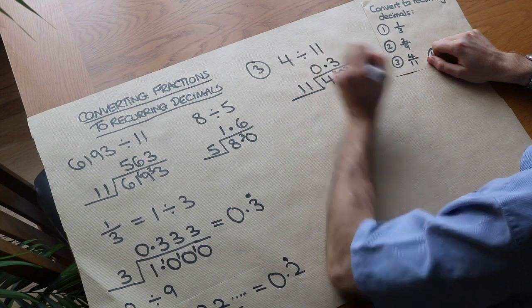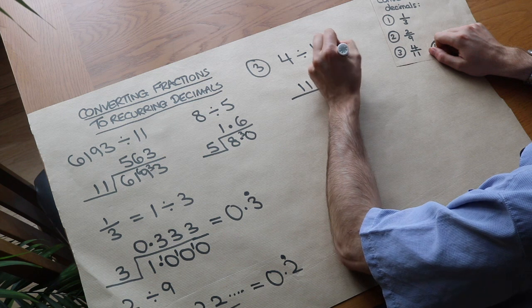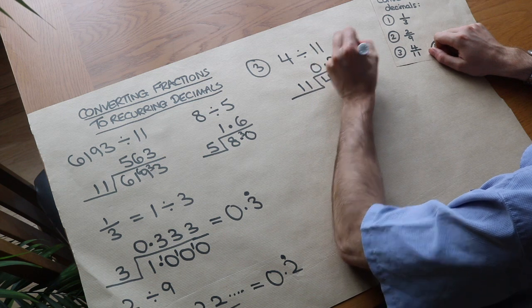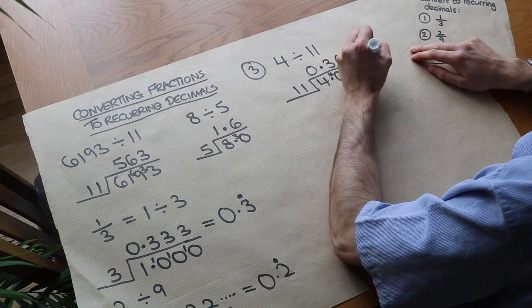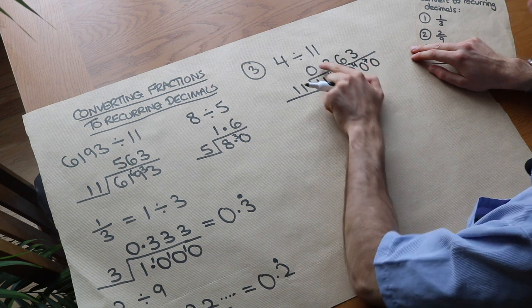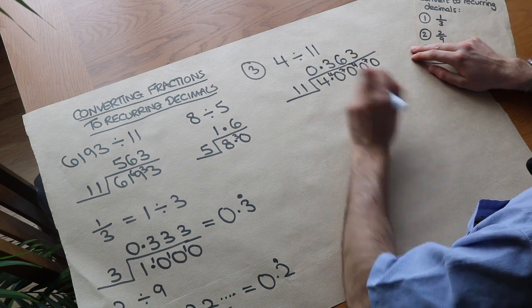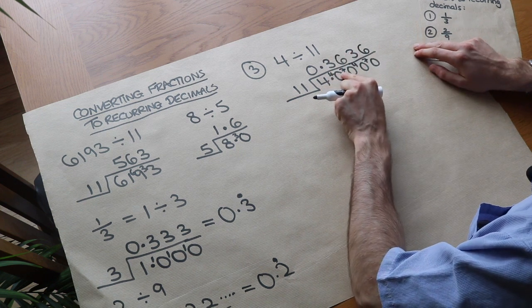So we put the 7 here with an extra 0. How many times does 11 go into 70? 6 times remainder 4. How many times does 11 go into 40? 3 times remainder 7. And basically, once you see the same remainder again, we know it's going to start to repeat. So we know this would then be 6 again. And it would go 3, 6, 3, 6, 3, 6.